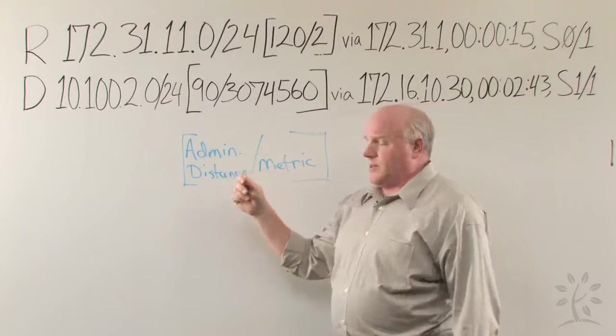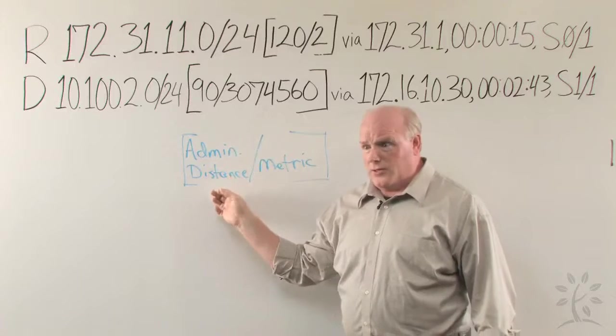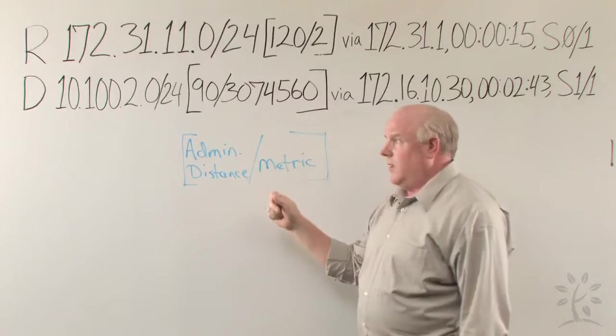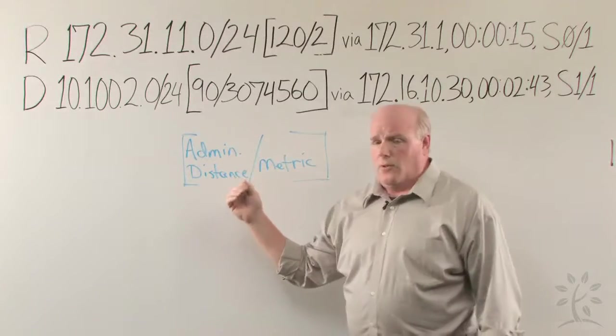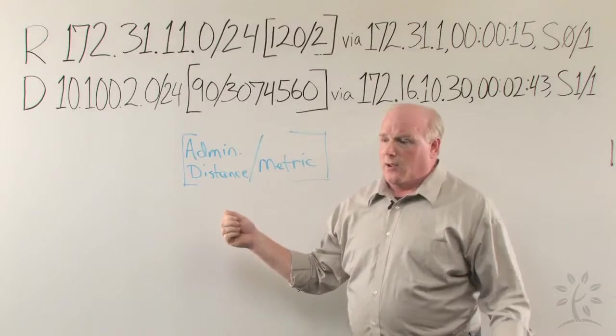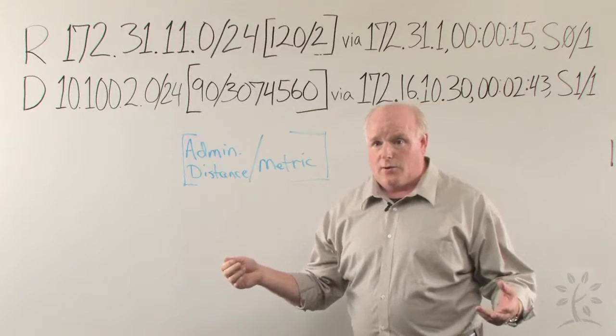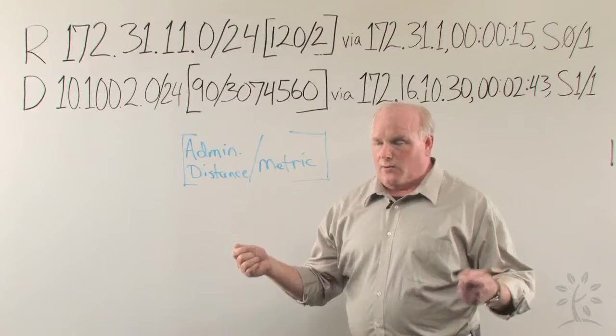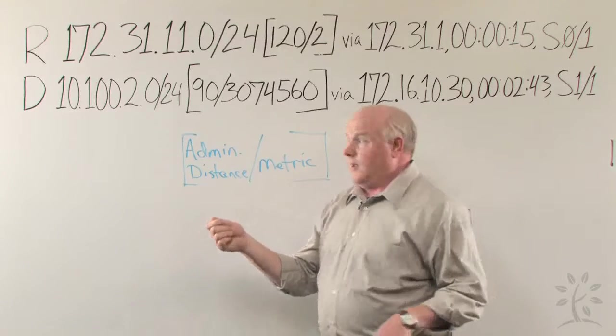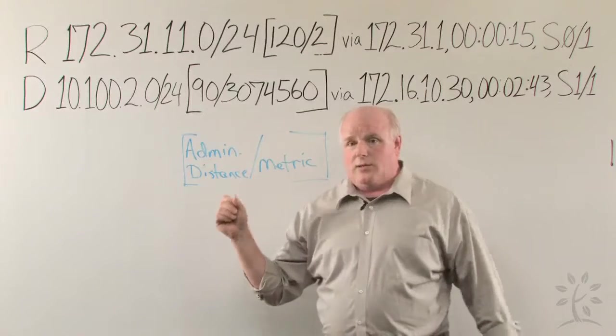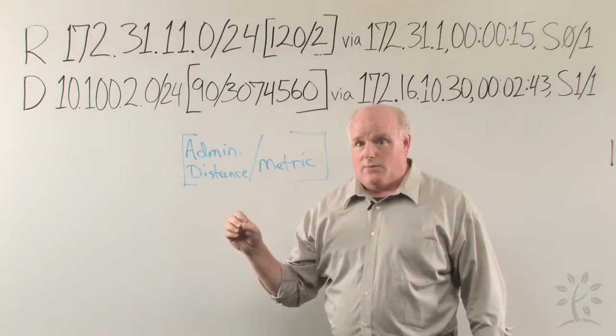Now, administrative distance, reliability of routes and administrative distance go hand in hand. The more reliable the route, the lower the administrative distance. Now, what could be more reliable than a route that's directly connected to your router? If two routers are directly connected, or if a network is directly connected, that is an administrative distance of zero.